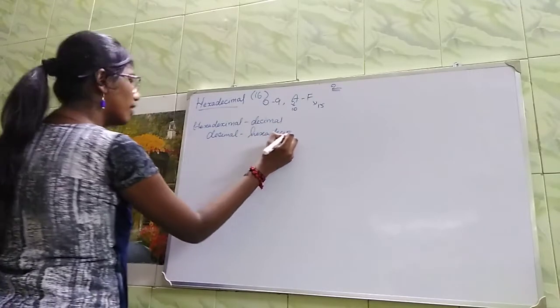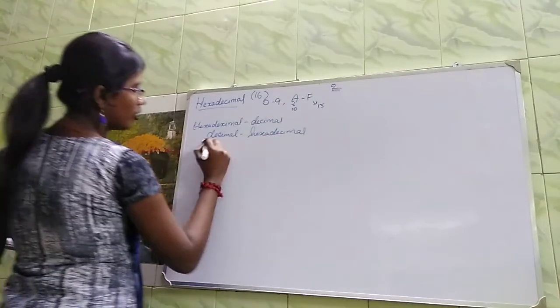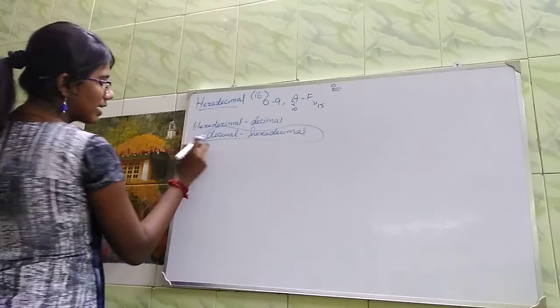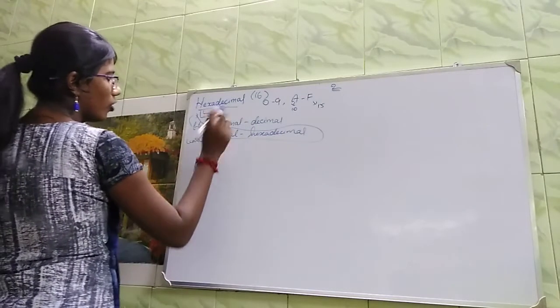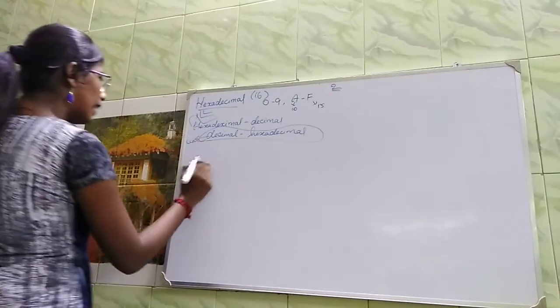The conversions are good. Now we have decimal to hexadecimal. First, we will talk about hexadecimal—how to do the hexadecimal conversion. This method, then this method.